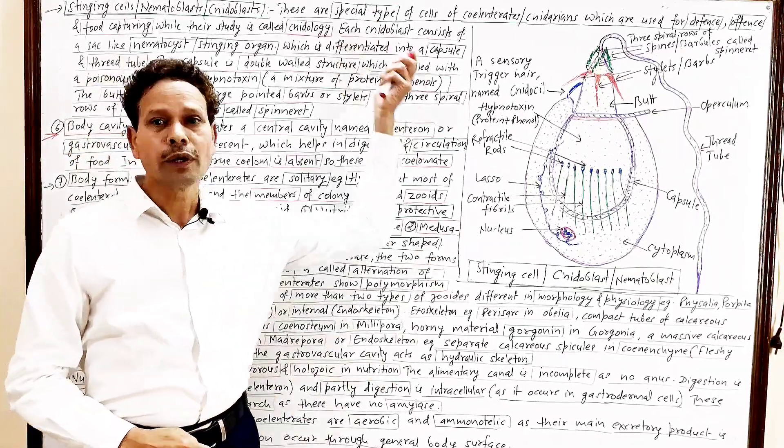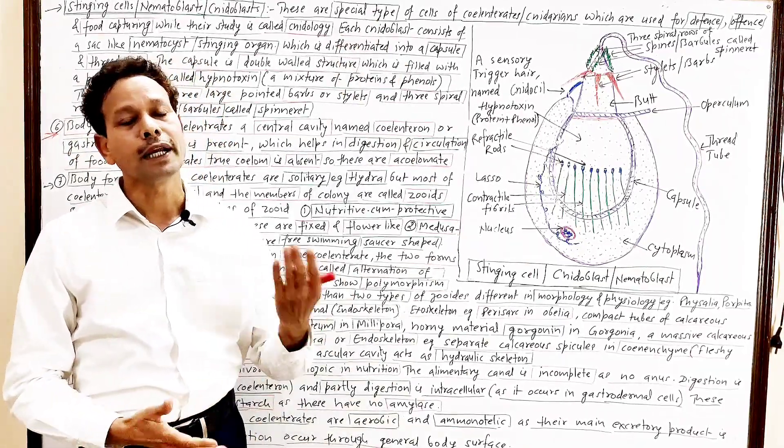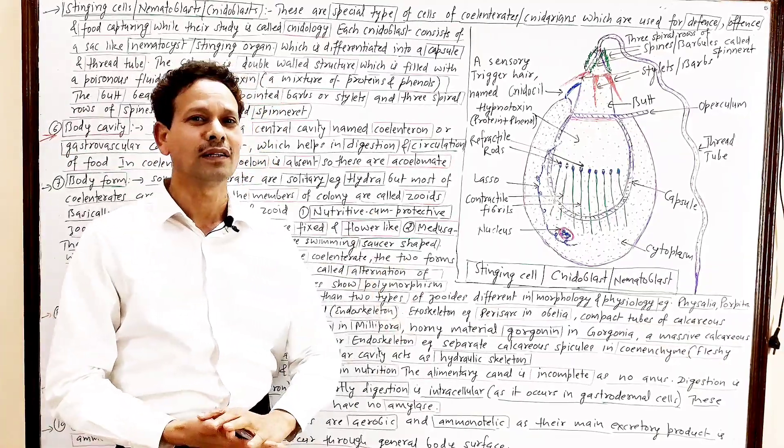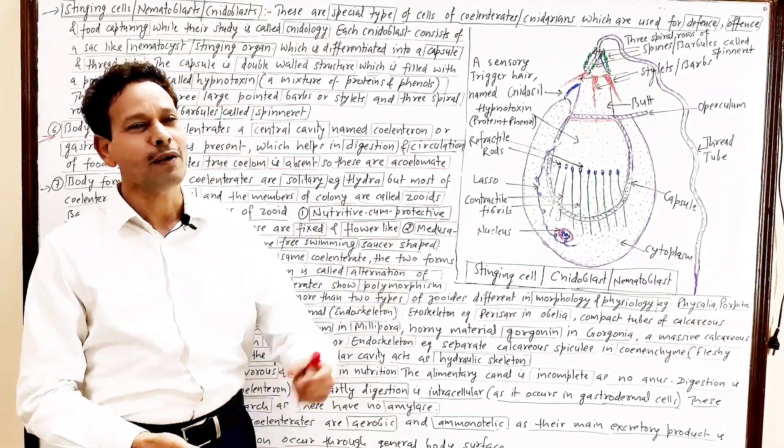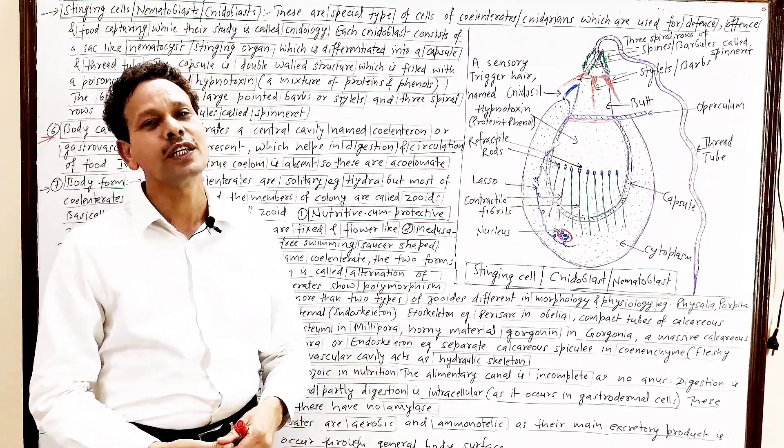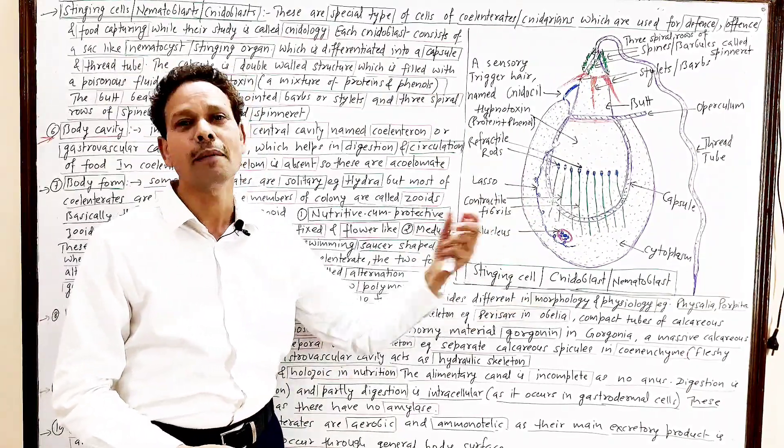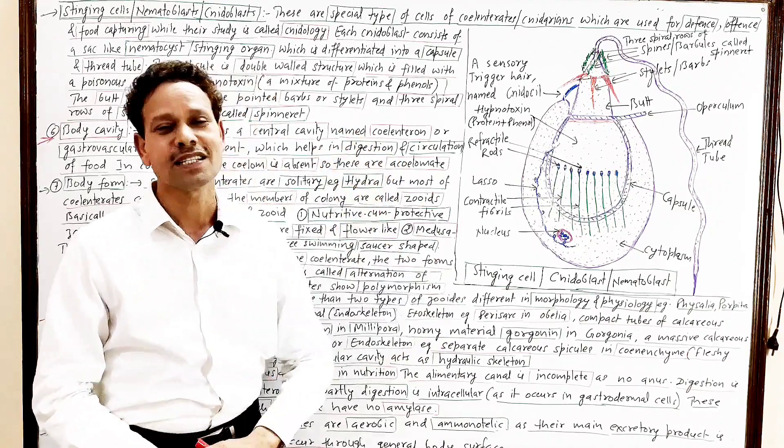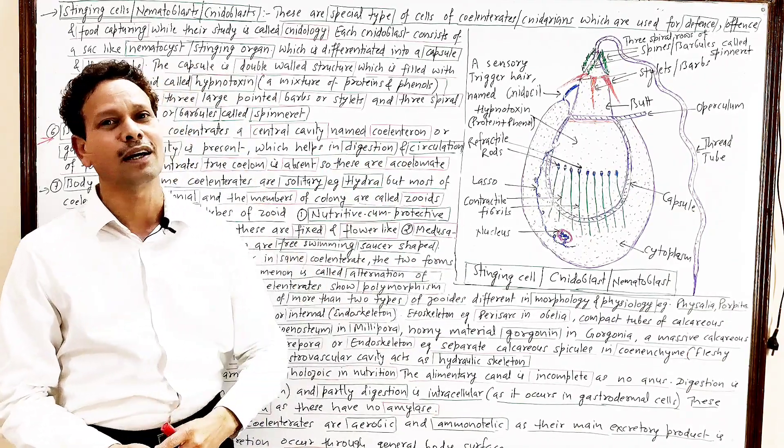Dear students, today we will discuss phylum Coelenterata, animals having sac-like body. These are cnidarians having special type of stinging cells, nidoblast, nematoblast, and due to presence of radial symmetry, this phylum is also named Radiata.